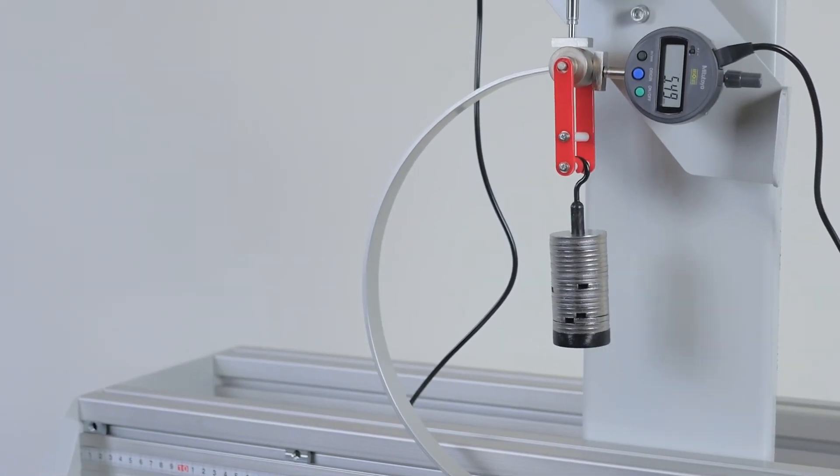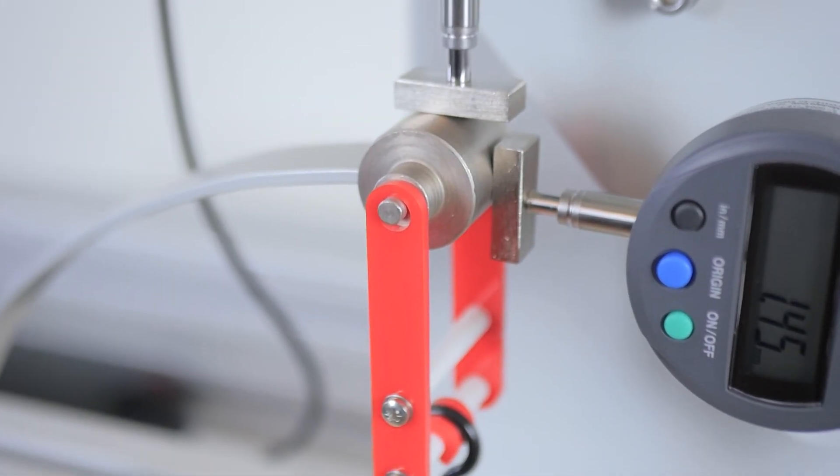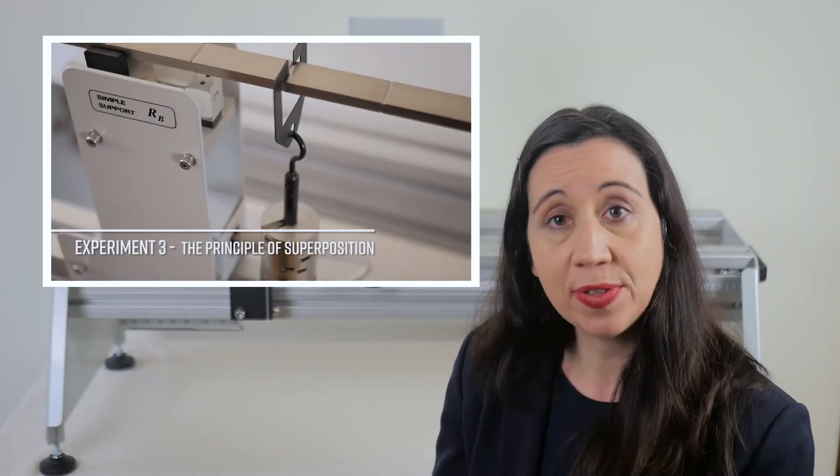Now you can consider what is the overall best design for minimal deflection. This is one of 21 experiments within the Next Generation Structures range from TecQuipment. For more information on the curved bars and davits experiment and other experiments within the range, click on the links below.